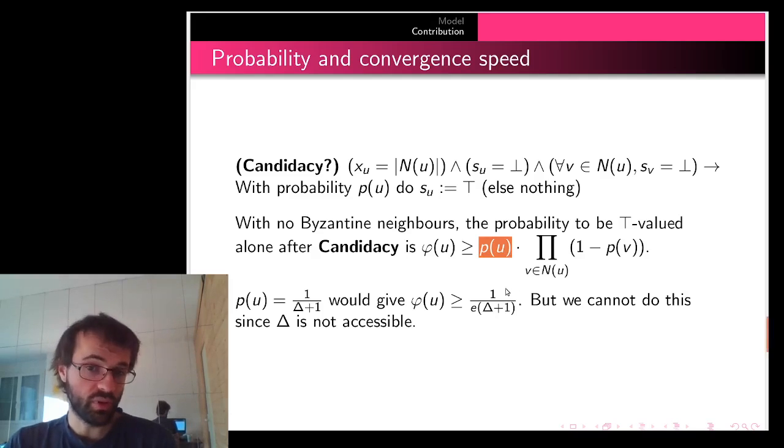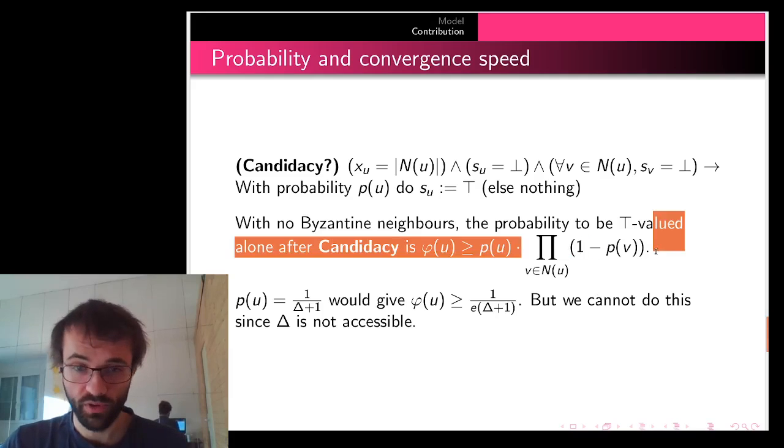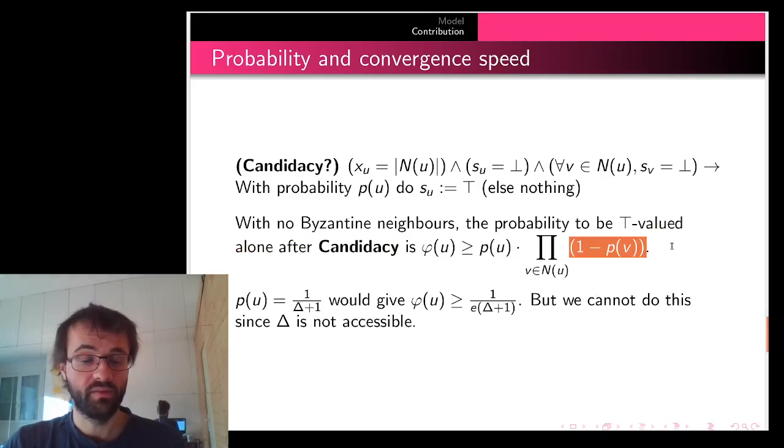times the complementary of the probabilities for its neighbors to be top-valued. That is at most that value because maybe they are not activated. So it's not exactly that value, but it's greater than that.